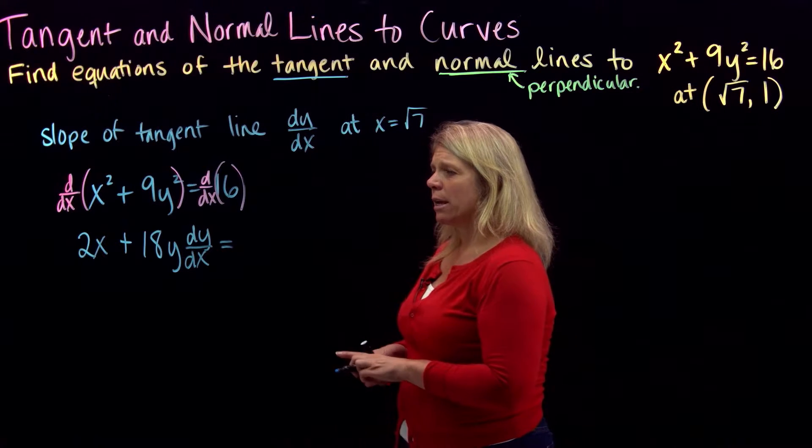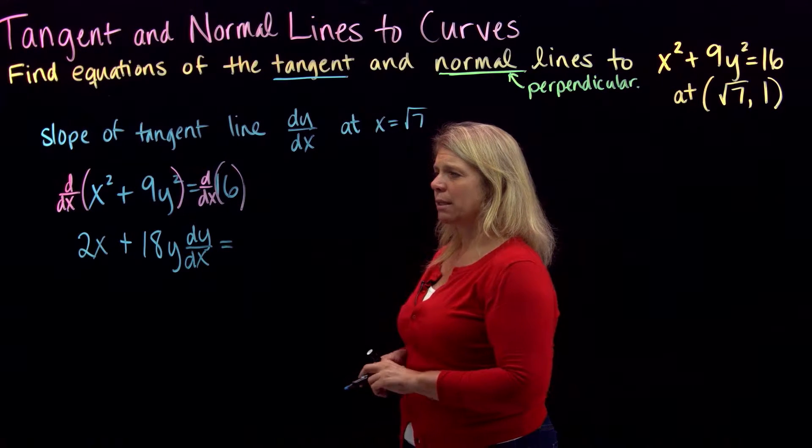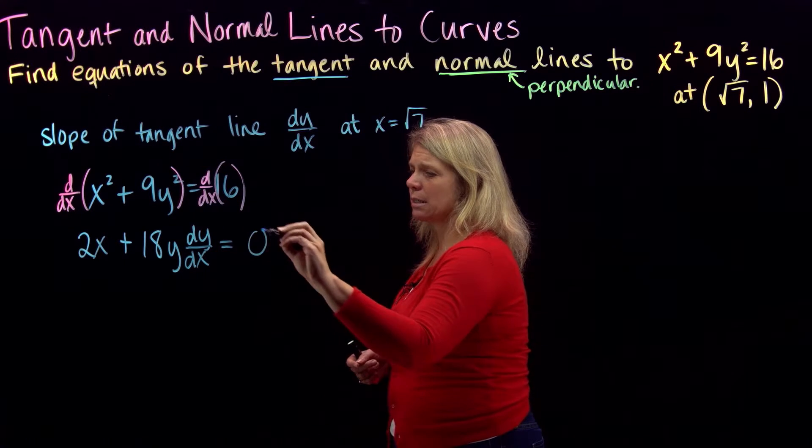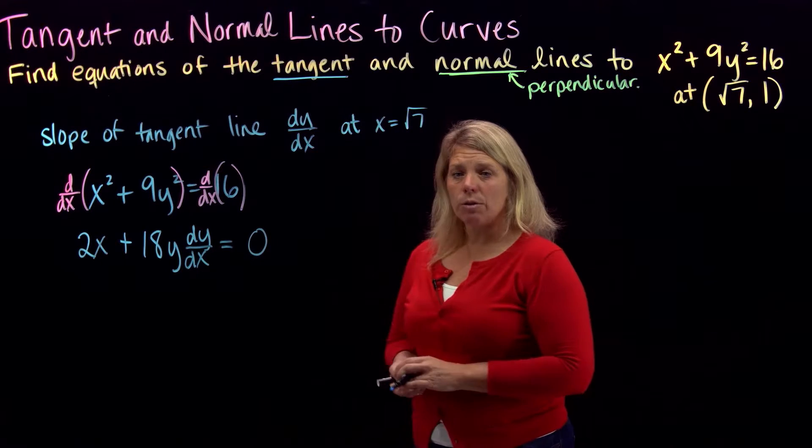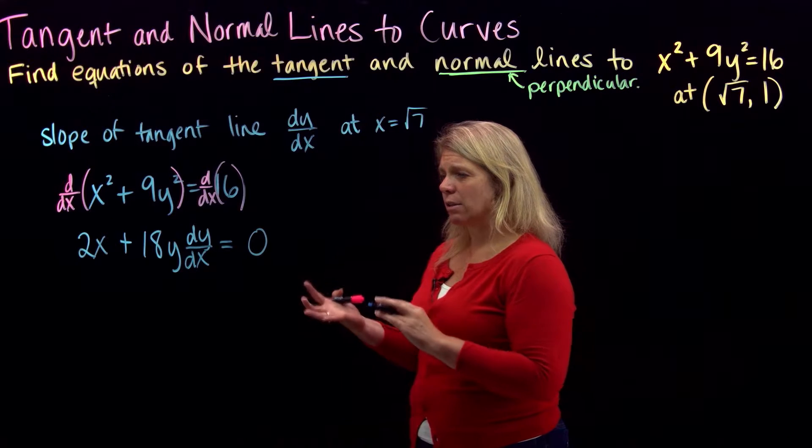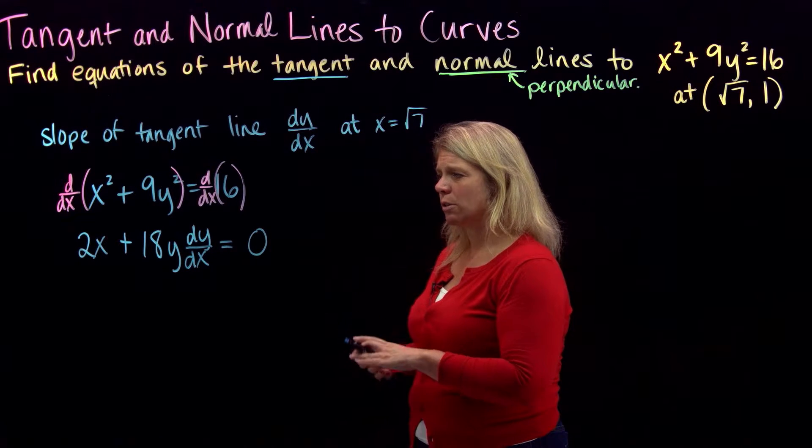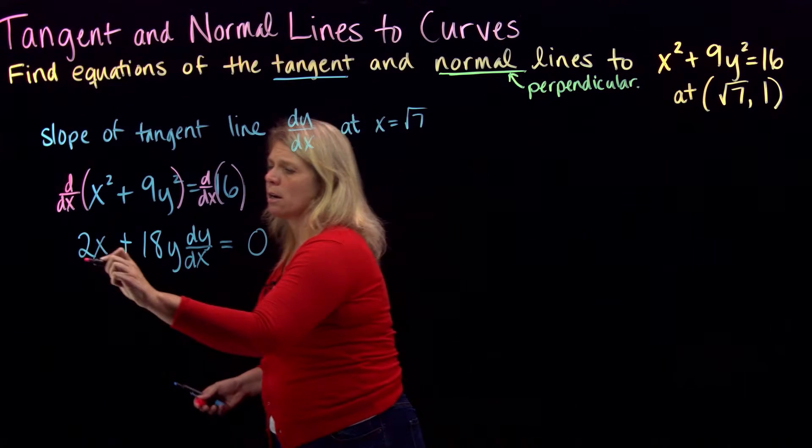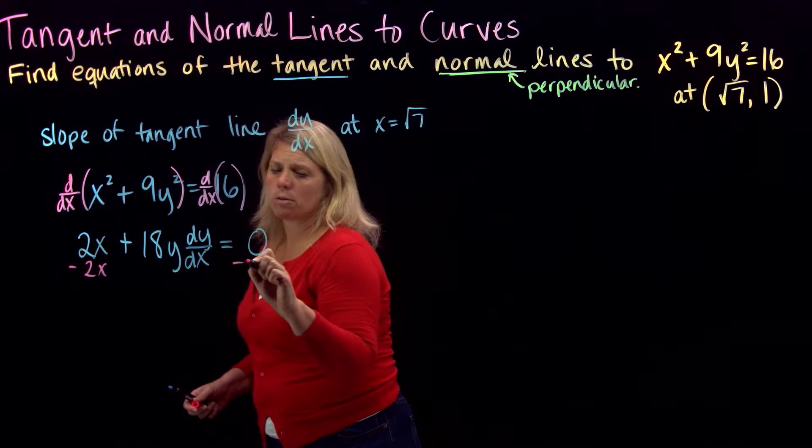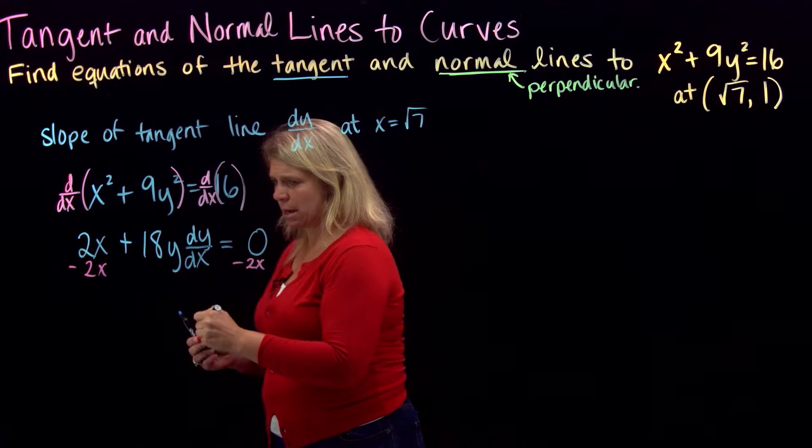And then the other side of the equation, don't forget to differentiate that with respect to x. So the derivative of a constant with respect to x is zero. And then when you do implicit differentiation, remember that you need to solve for dy dx. So I'm going to do just a couple little steps of algebra here. Subtract 2x from both sides, and then divide through by the 18y.